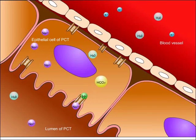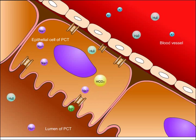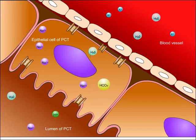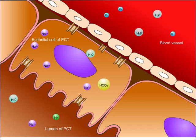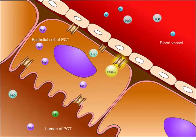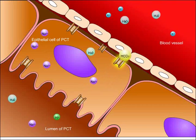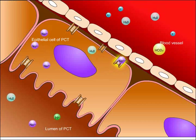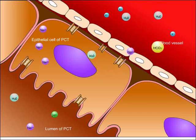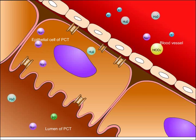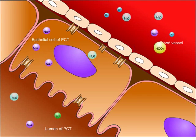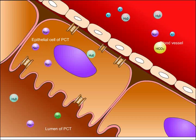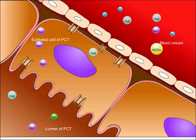Hydrogen ions leave the cell through the sodium-hydrogen antiport in exchange for sodium to enter the lumen. Furthermore, bicarbonate is reabsorbed into the blood through sodium-bicarbonate co-transport channels, or NBC1, followed by sodium. Thus, for every one hydrogen ion leaving the cell to enter the lumen, one bicarbonate ion is reabsorbed into the blood.